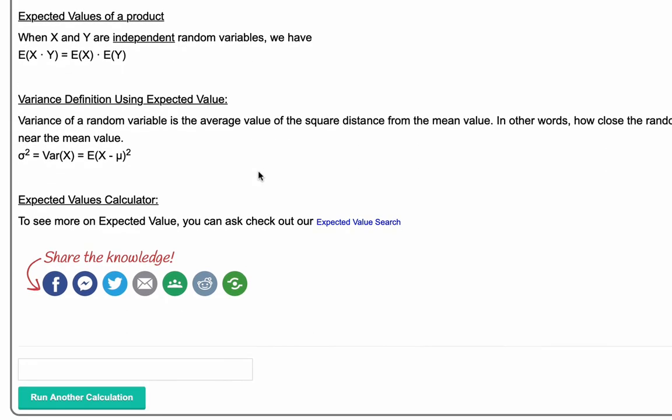Next, the expected value of a product. If we have two random variables X and Y, we have the following formula. The expected value of X times Y equals the expected value of X times the expected value of Y. Now I underline the word independent, because if the two variables are not independent, this formula does not hold.